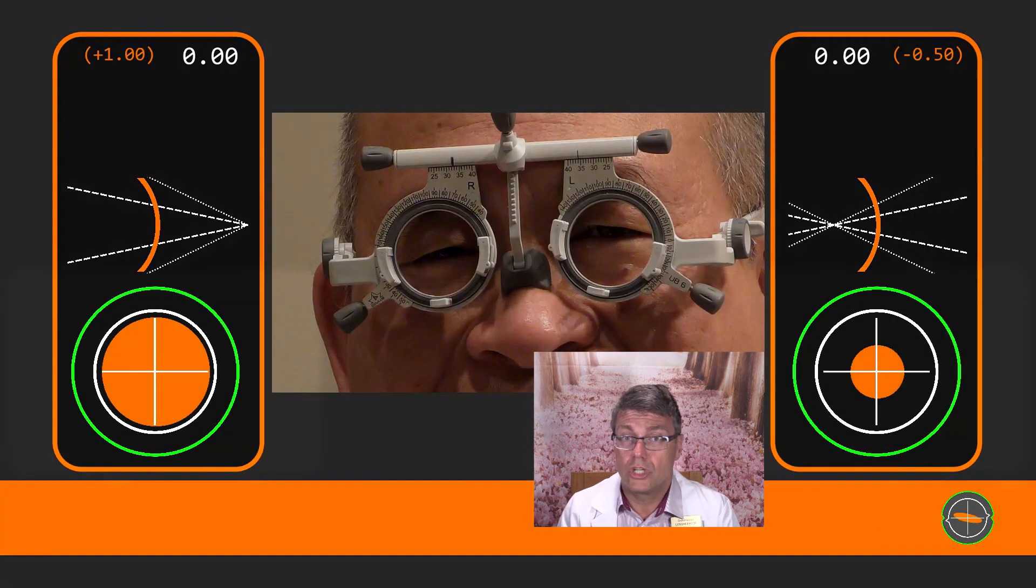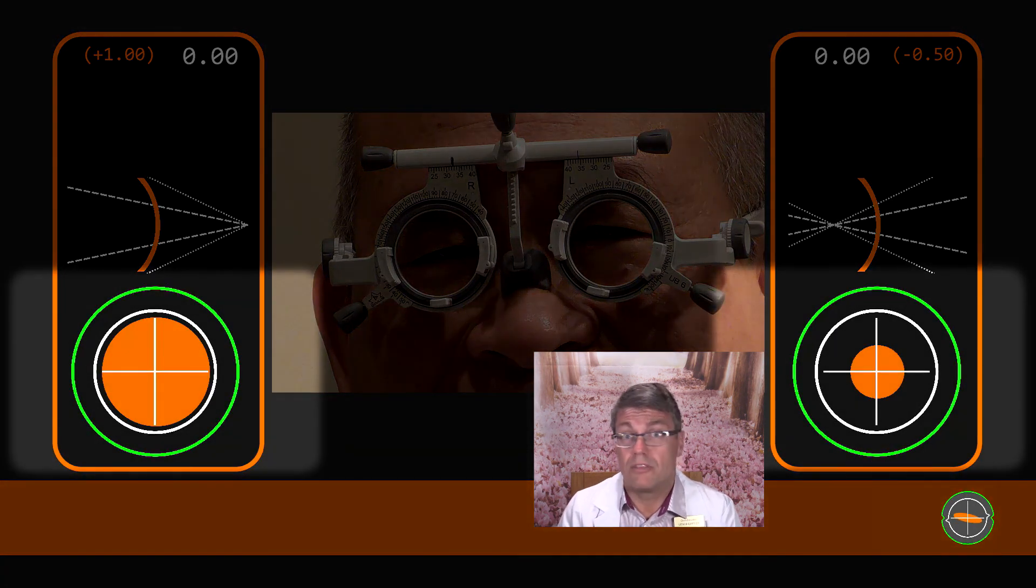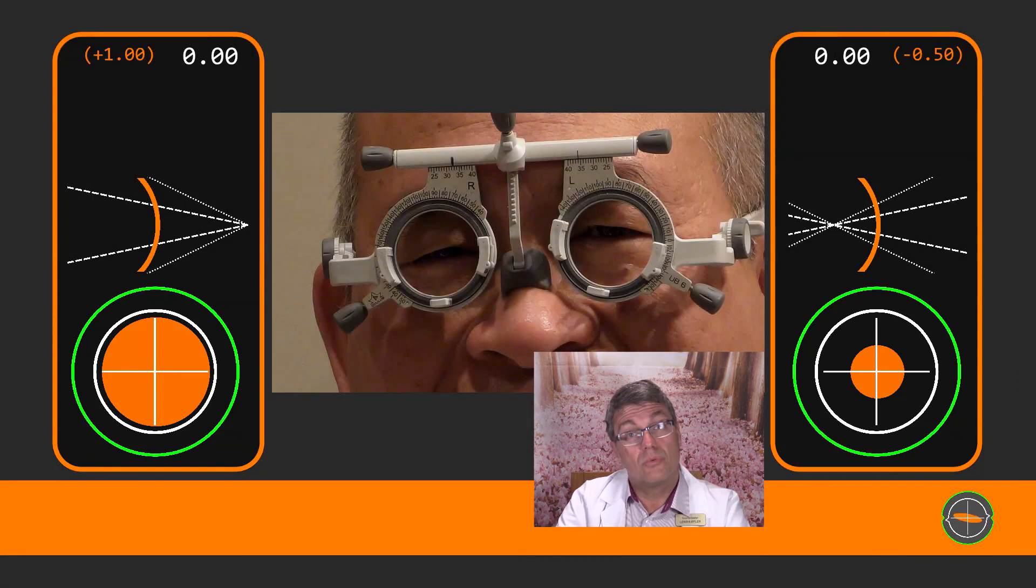The lower diagram shows how big the blur circle is on the retina. In simple terms the bigger it is the more incorrect the lenses are. Now that we've set the scene let's roll the video. I'm going to stop the video on first viewing to give you some technique tips that I think are important. Then at the end you'll get to see the whole video right the way through. So let's start.